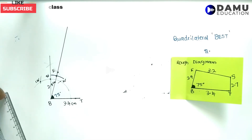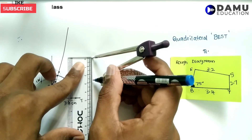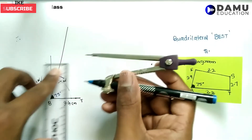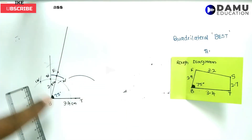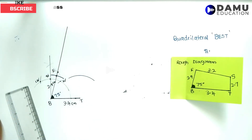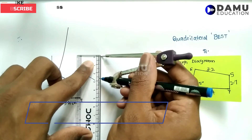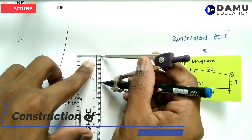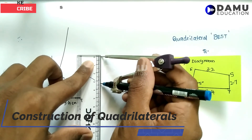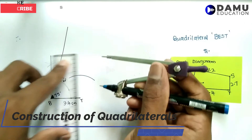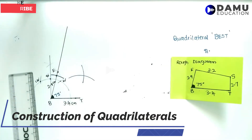From T, we need to take 2.7 cm. Set the compass to 2.7 cm — this is exactly 2.7. With T as center, draw one arc with 2.7 cm. And ES = 3.2 cm, so from E, set the compass to 3.2 cm. With E as center, draw one arc.